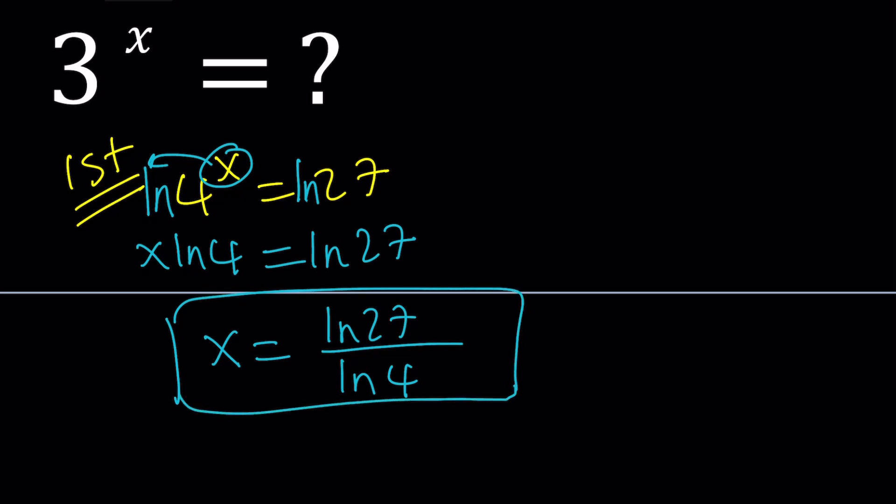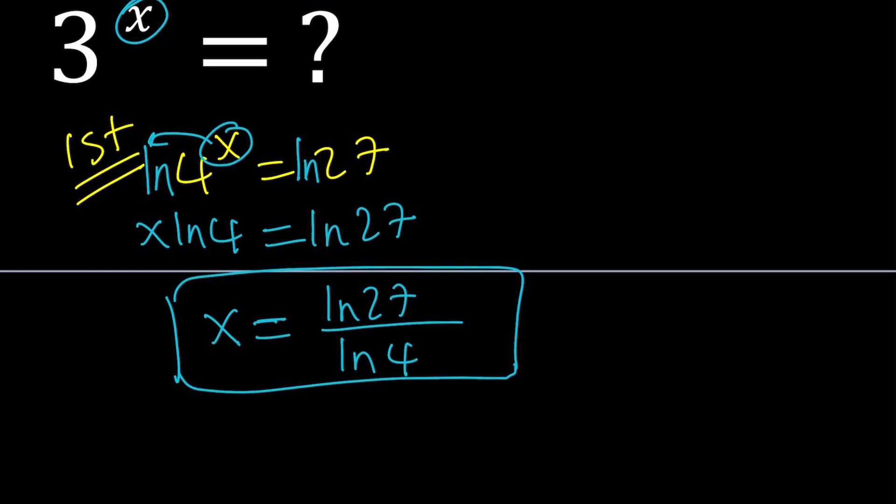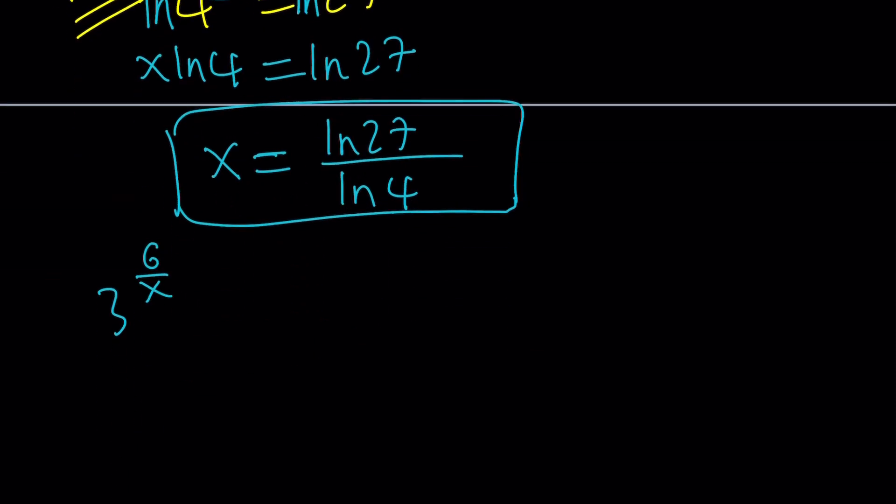So we found the numerical value of x because we can use a calculator even though we don't need to. We're going to plug it in directly. Our goal is to basically evaluate 3 to the power 6 over x. Before we do that, instead of just writing the 3, let's go ahead and evaluate 6 over x first.